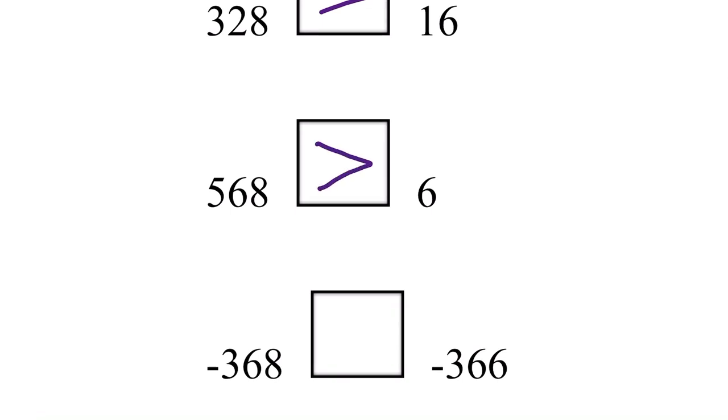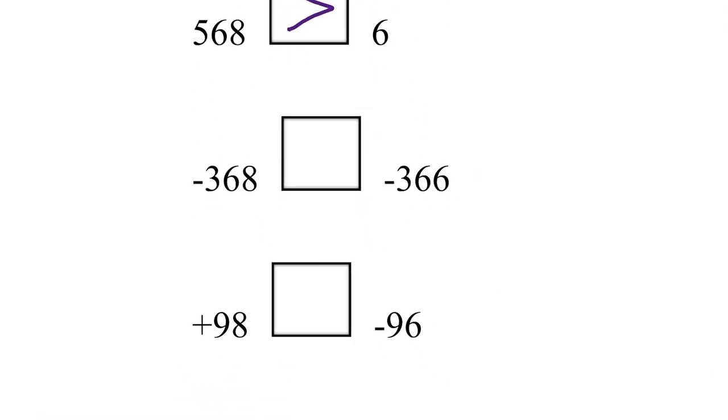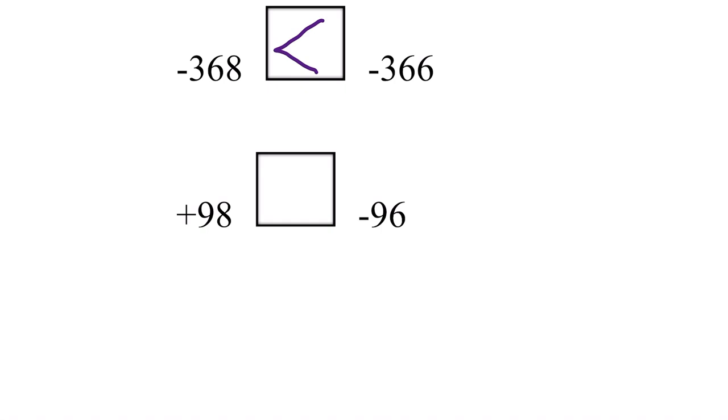Bigger. How about these very big numbers? They are both negatives, so the one closer to zero, the closer to positive ones are bigger. So negative 366 is bigger than negative 368.